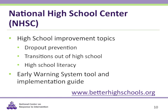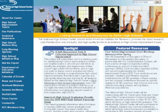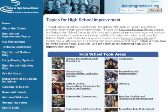The High School Center also provides a suite of products on early warning systems, including an implementation guide and tool. This is the homepage of the National High School Center. The Spotlight section highlights new reports and publications relating to high school improvement, and the Featured Resources section shows important High School Center resources. The navigation on the far left includes links to all High School Center publications, their blog High School Matters, and information about Department of Education initiatives that affect high schools. For resources related to high school RTI, check out the High School Improvement Topics page, which includes access for students with disabilities, graduation, and literacy.